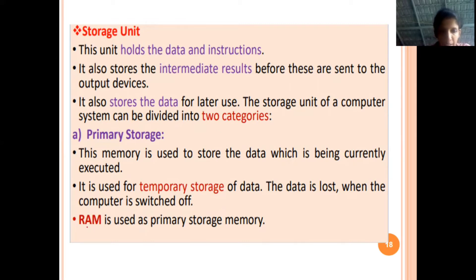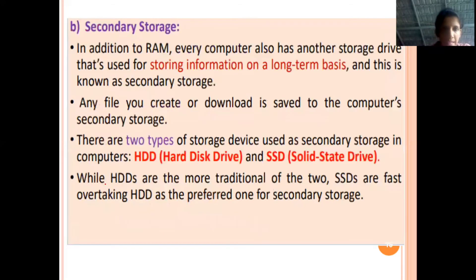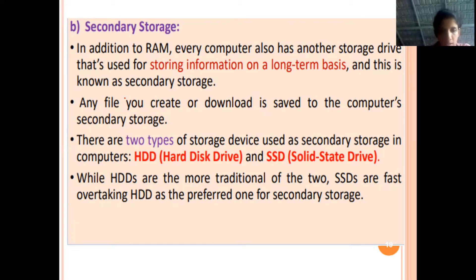An example of primary storage is RAM — random access memory. RAM is a primary storage unit with limited size. When we need to store a large amount of data, we use secondary storage such as a hard disk or SSD (solid state devices). Data is stored long-term in secondary storage. Whenever we need that data, we fetch it into primary memory in order to execute and perform operations on it.